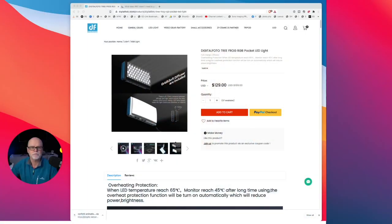Now the company is called Digital Photo and the light is called Tree Frog. Let me switch over and I'll just show you what the unit is. So this is the unit. The company is called Digital Photo and it's Tree Frog RGB light.